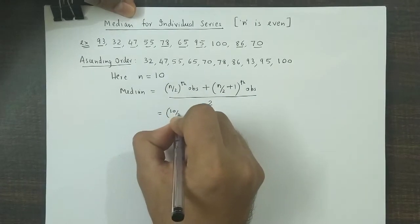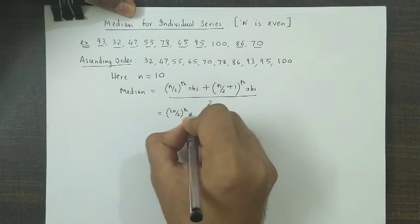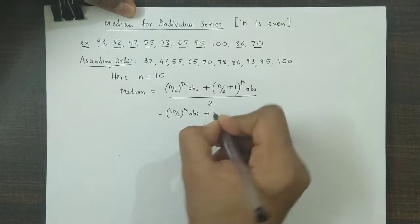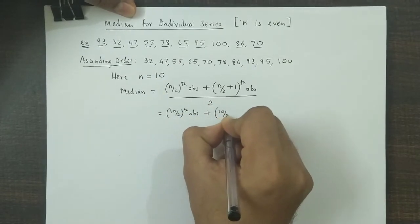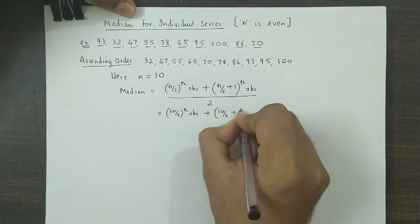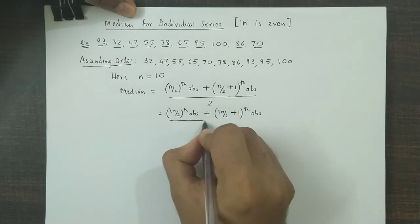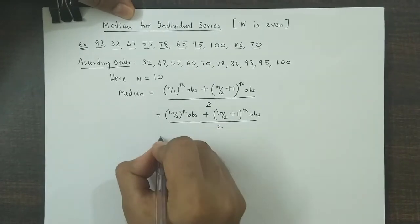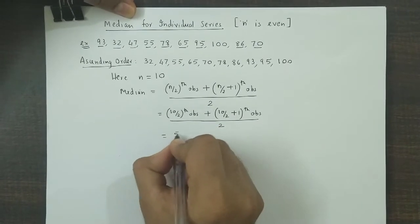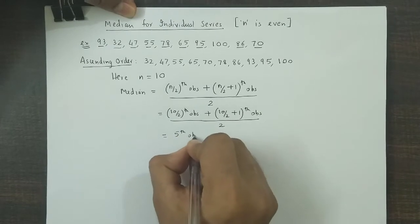We'll have ten by two observation plus ten by two plus one observation, divided by two. Now ten by two gives five, so it is the fifth observation.